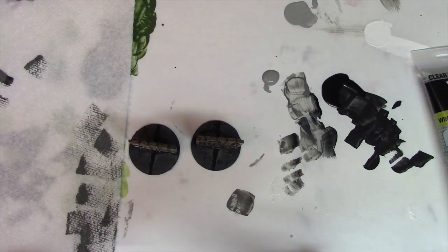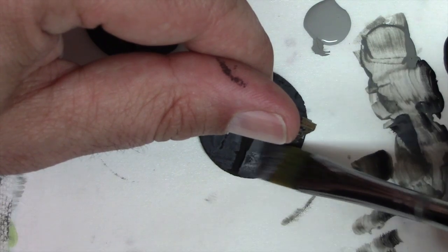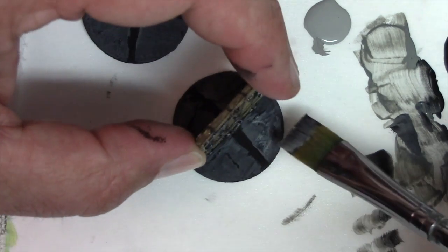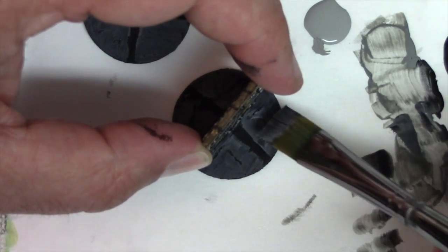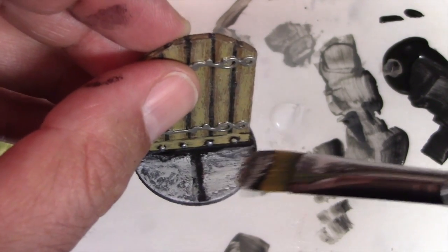Okay, so next I move to light gray. I don't clean the brush. It's still got that dark gray on it. Now I'm dry brushing, and I'll hit it from a couple of different directions. And the raised areas become more visible. Finally, I dry brush it again with white.